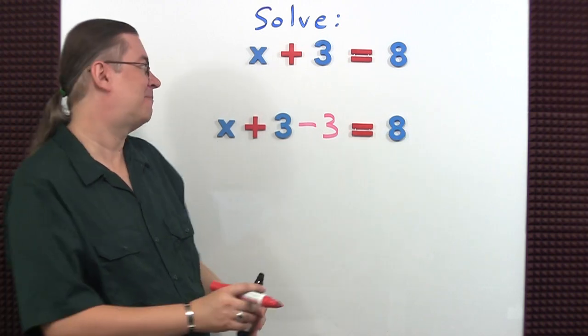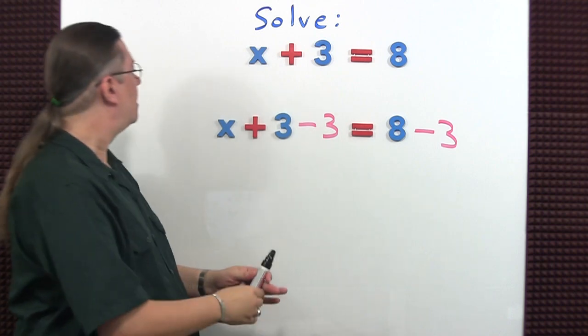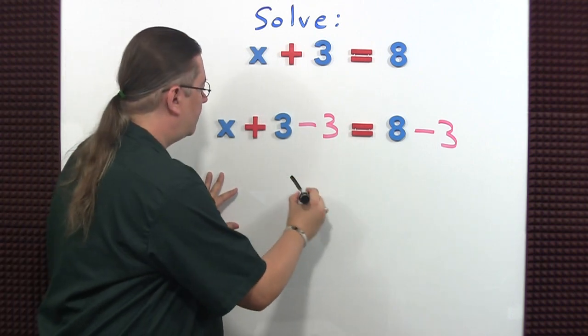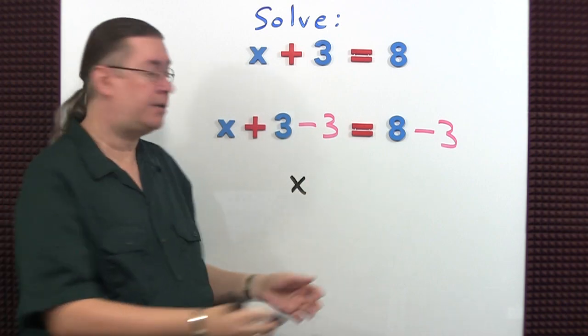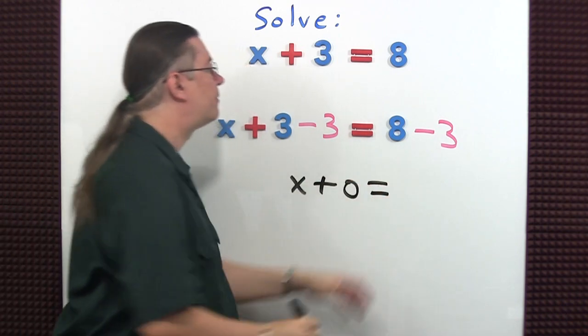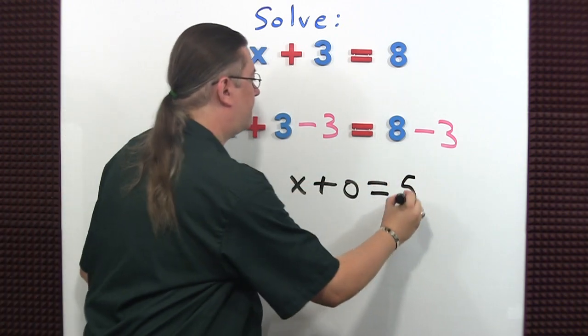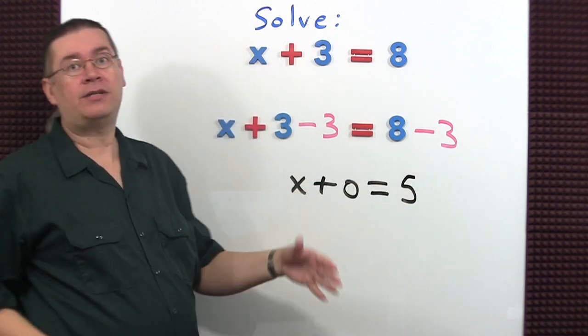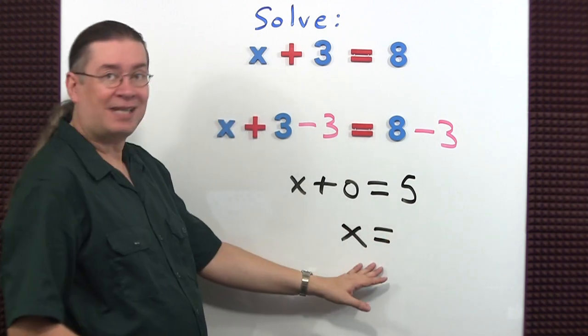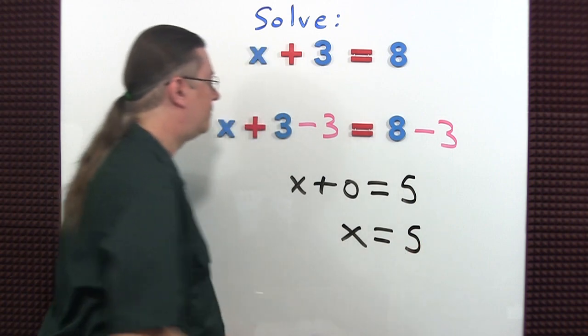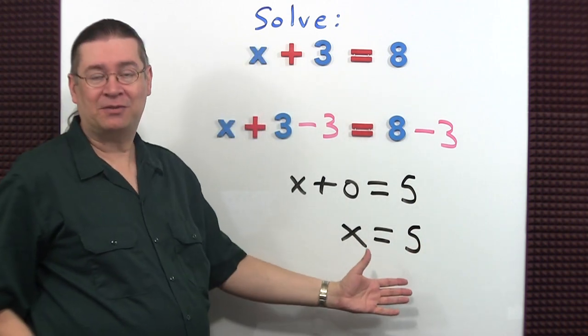Now let's simplify. 3 minus 3 is 0. 8 minus 3 is 5. x plus 0 is just x, and it equals 5. We've isolated the variable, so we've solved the equation. We're done.